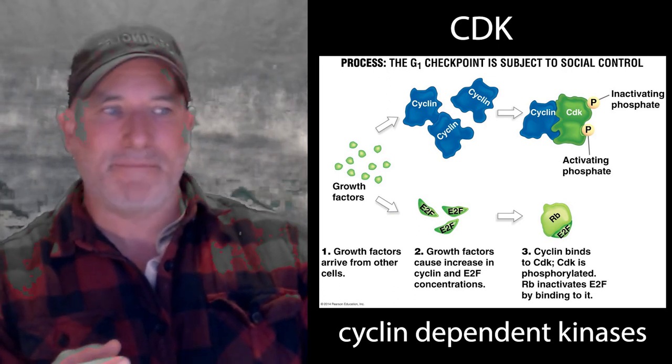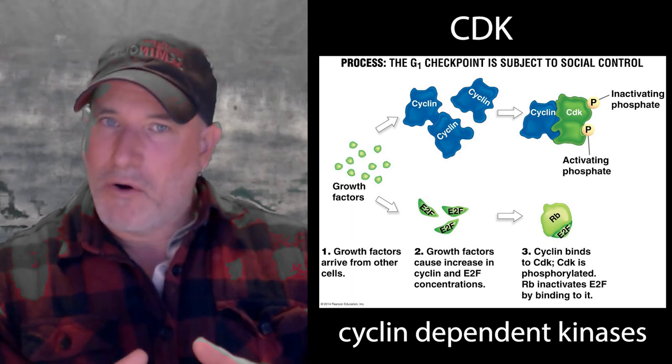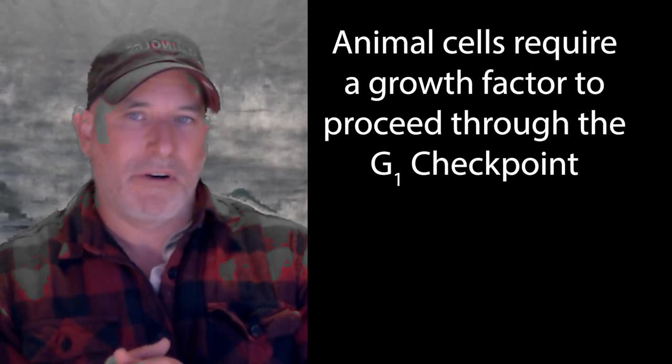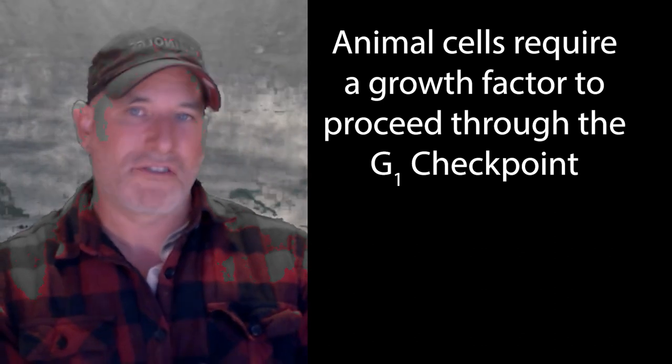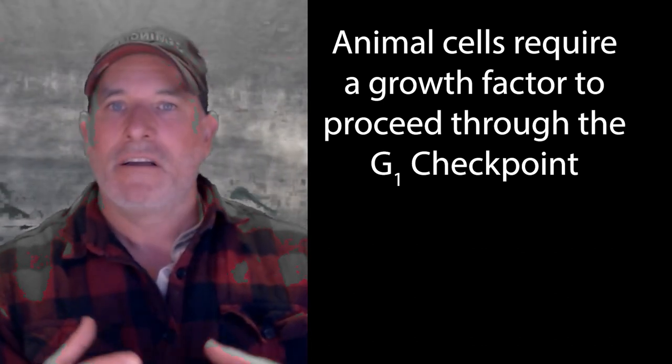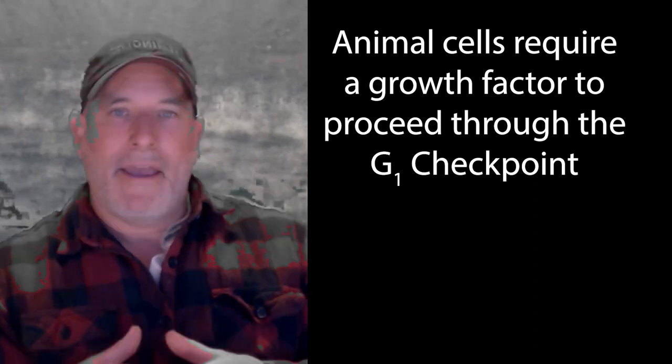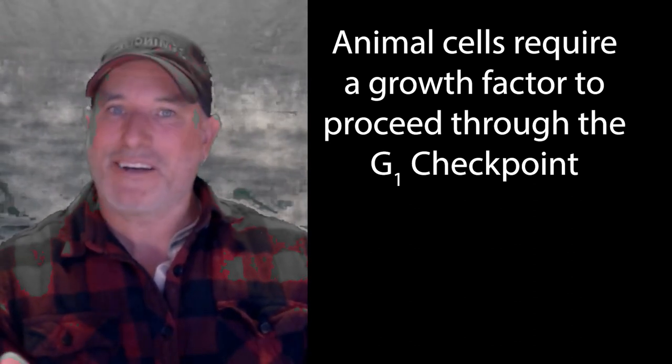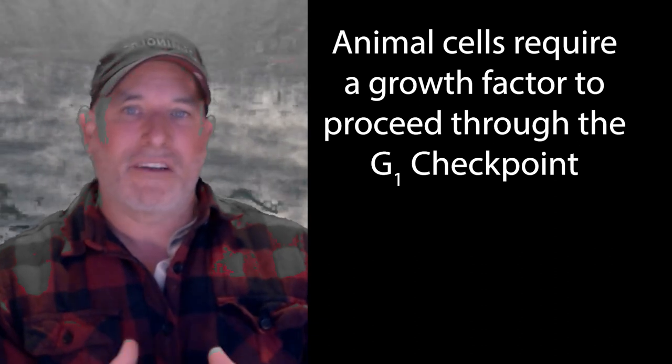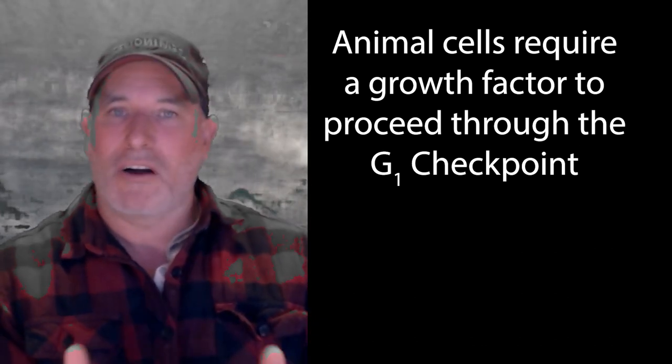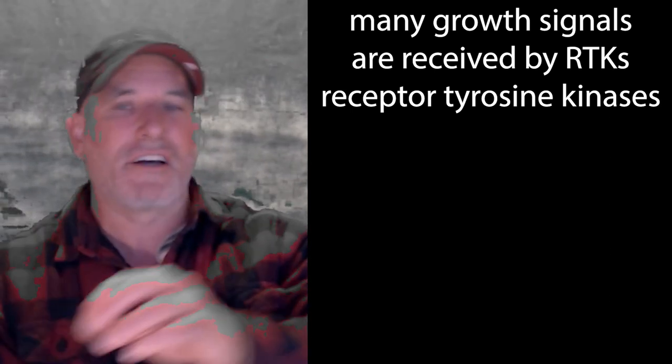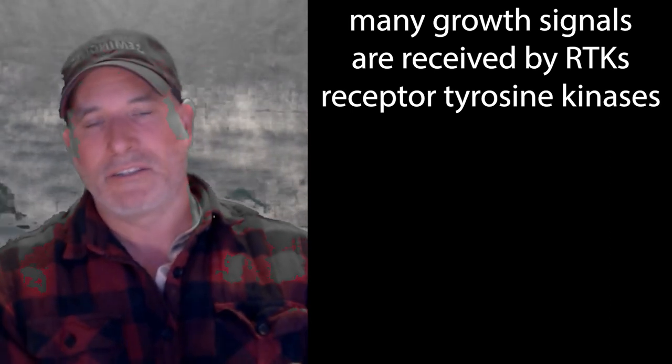In animals, you guys know this. For a cell to get past a G1 checkpoint, it must receive a growth signal. That's a mitogen. These are signals that will cause the cell to go into mitosis. And a lot of this social signaling, as the book likes to call it, they're coming from outside the cell. And they're received by RTKs, receptor tyrosine kinases, that take the signal from outside the cell and transmit it into the cell.